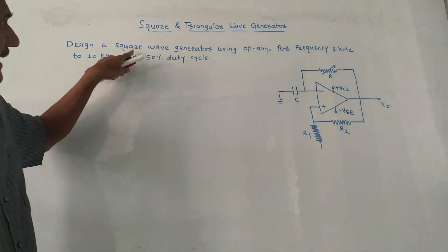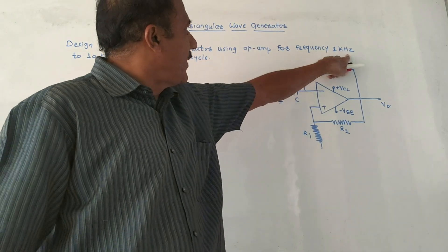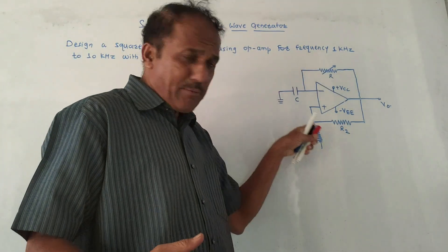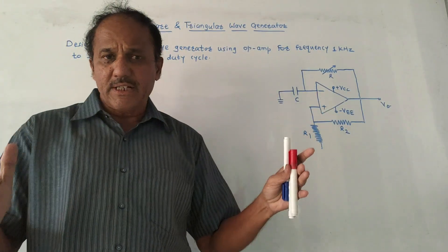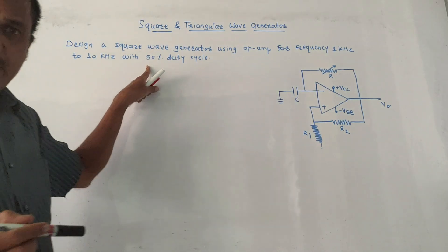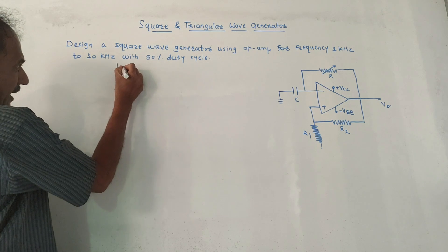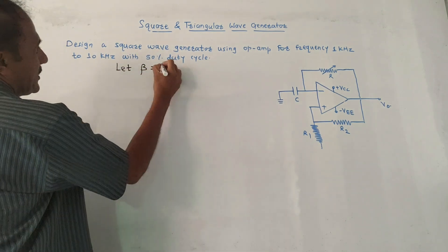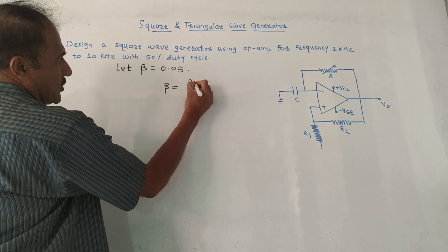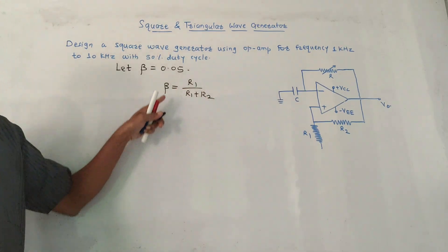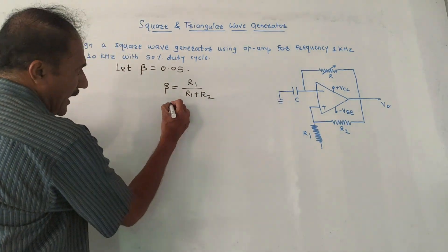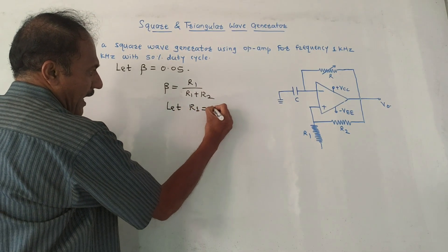Now let us solve a numerical: design a square wave generator using op-amp for frequencies 1 kHz to 10 kHz with 50% duty cycle. The value of feedback factor β is not given in the question, so we assume β = 0.05. We have the formula β = R1 / (R1 + R2). With β assumed and two unknowns R1 and R2, we consider a standard value R1 = 1 kΩ.